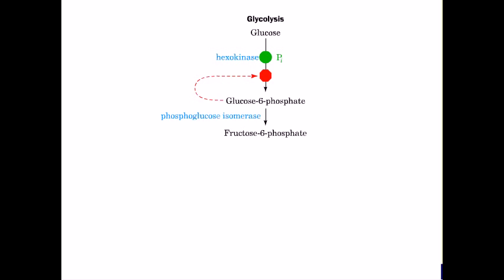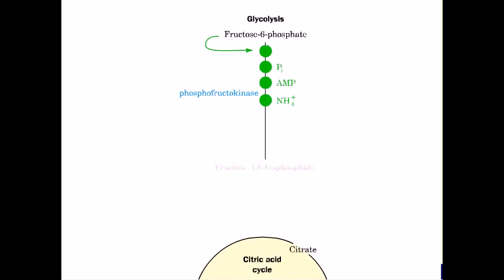Phosphoglucose isomerase converts glucose 6-phosphate to fructose 6-phosphate.